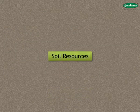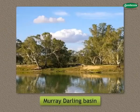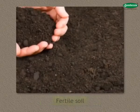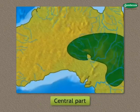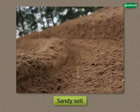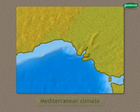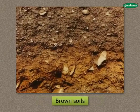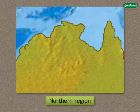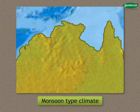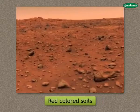Soil Resources: The Murray-Darling Basin has fertile soil. The central part of Australia is a hot desert covered by sandy soil. Southern areas of Mediterranean climate have brown soils. The northern regions of monsoon-type climate have red-coloured soils.